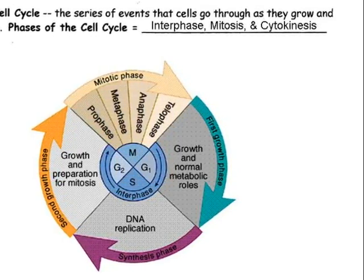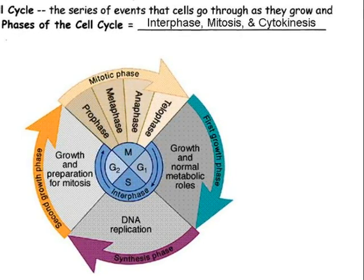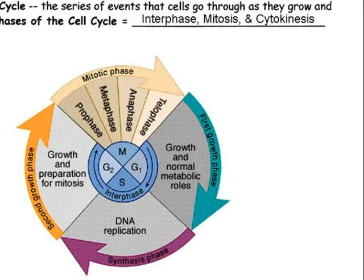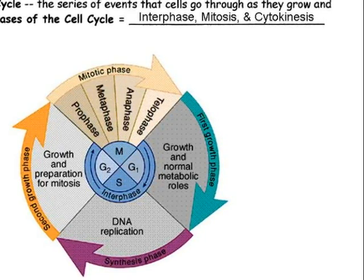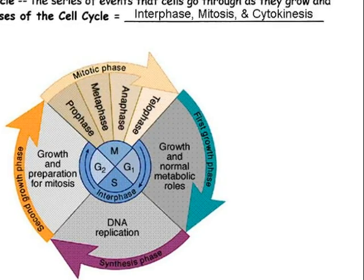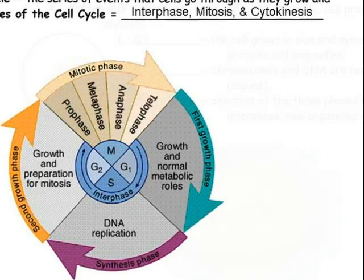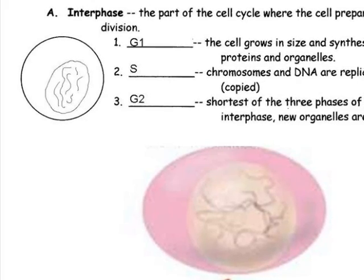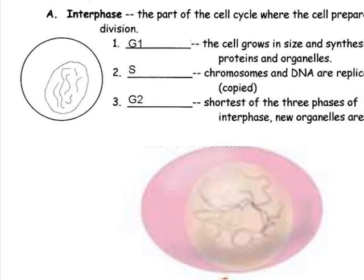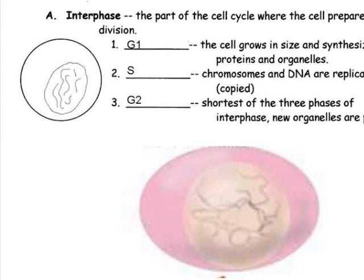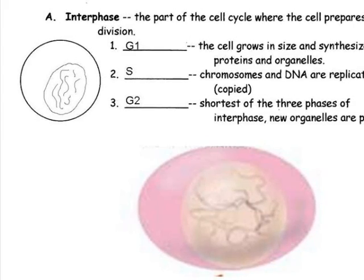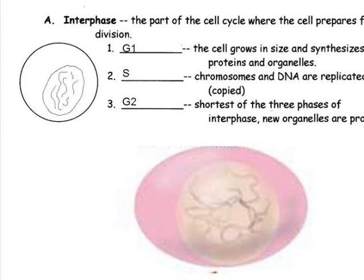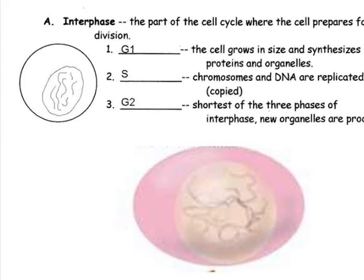There are distinct phases of the cell cycle. They include interphase, mitosis, and cytokinesis. Let's take a look at those phases to understand what our cells have to do in order to make the organism that we are. Interphase is the part of the cell cycle where the cell prepares for division.